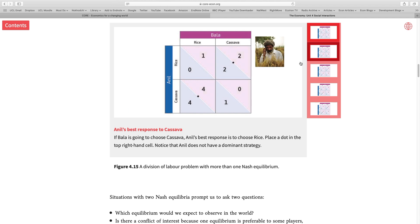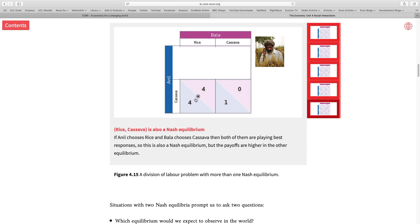I'm now Bala. What am I going to do if Anil decides to produce cassava? Now in this case, if I produce cassava I'll get zero, rice I'll get four. Therefore I decide to produce rice and I put a circle around that decision to mark my best response, Bala's best response.